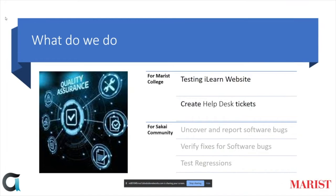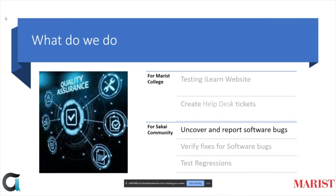Here at Marist College, as student employees, the most common work we do is to test the tools of the ILEARN learning management system in preparation for our upgrades, which occur every summer and winter. We also respond to questions from teaching faculty and students about how to use ILEARN. QA testing primarily involves three things: uncovering and reporting software bugs, which are parts of software that are either broken or not working as designed. The bugs in Sakai are tracked through a Jira instance, which contains information on what the bug is, which tool is being affected, on what versions the bug is present, and steps for bug testing and verification.